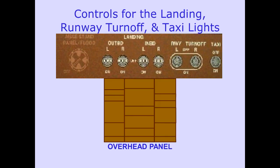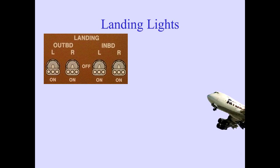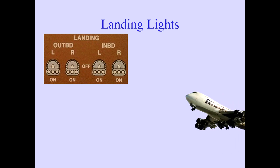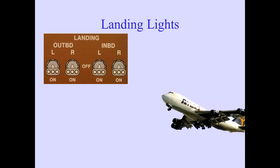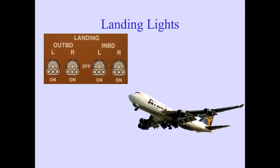Controls for the landing, runway turnoff, and taxi lights are located on the overhead panel. Two fixed landing lights are installed in the leading edge of each wing. These lights are controlled with the outboard and inboard light switches.